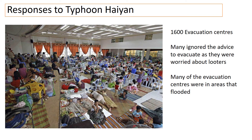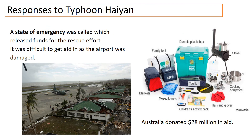The responses to Typhoon Haiyan were very mixed. The government had set up 1,600 evacuation centers, however many people ignored the advice to evacuate as they were worried about looters and didn't realise just how big the storm was going to be. Furthermore, many of the evacuation centers were in areas that flooded, so they were no good to anyone, and the centers only worked for a small number of people.